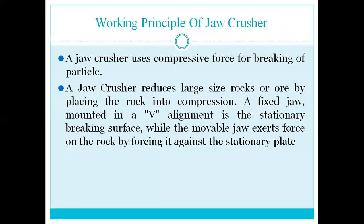The working principle of jaw crusher: a jaw crusher uses compressive force for breaking particles. It reduces large size rock by placing the rock into compression. A fixed jaw mounted in alignment acts as the stationary breaking surface, while the movable jaw exerts force on the rock by forcing it against the stationary plate.